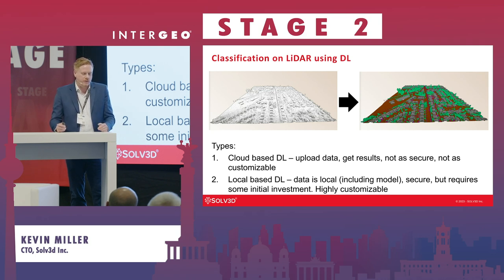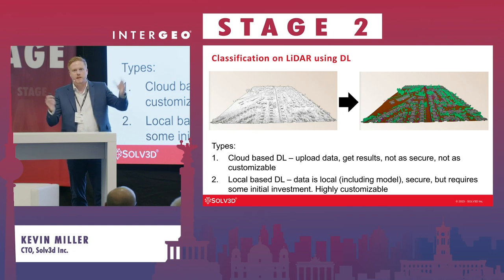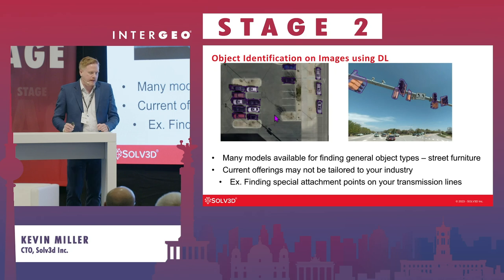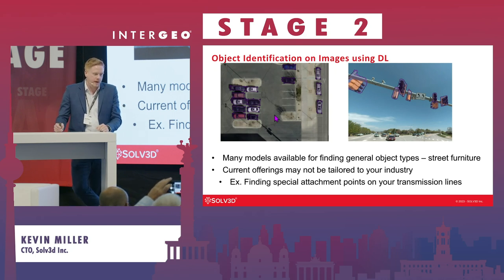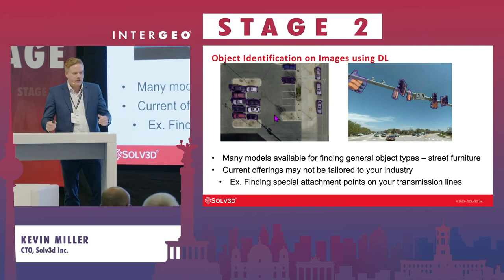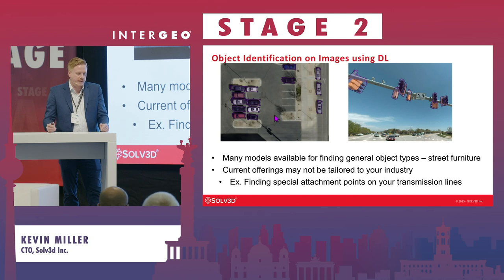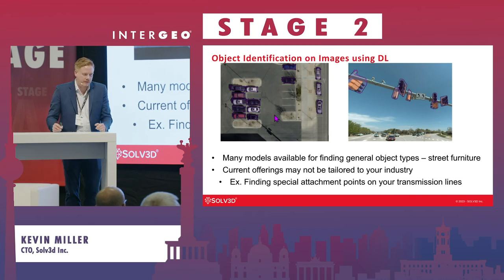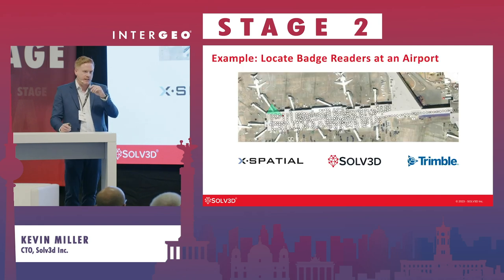Because of the local approach, it's highly customizable — you can train on any object, including special types of classes not part of common pre-trained models. On the imagery side, computer vision is very powerful: finding street furniture, signs, and poles is essentially a solved problem. However, if you're in the utility or telecommunications industry, there may be special objects in your data that those previously trained models don't understand, so custom training becomes necessary.